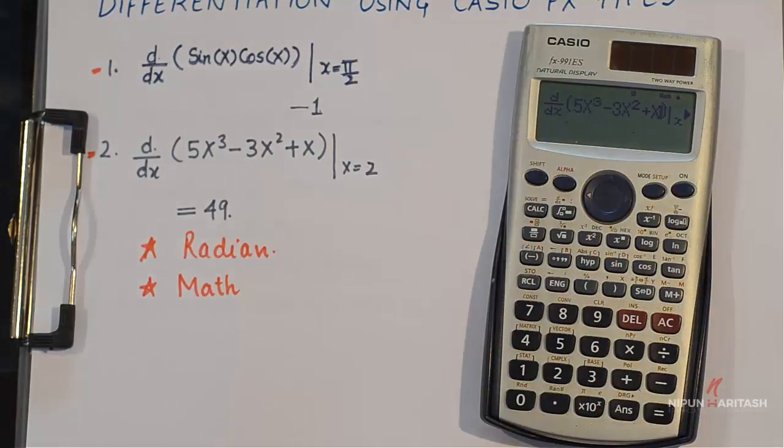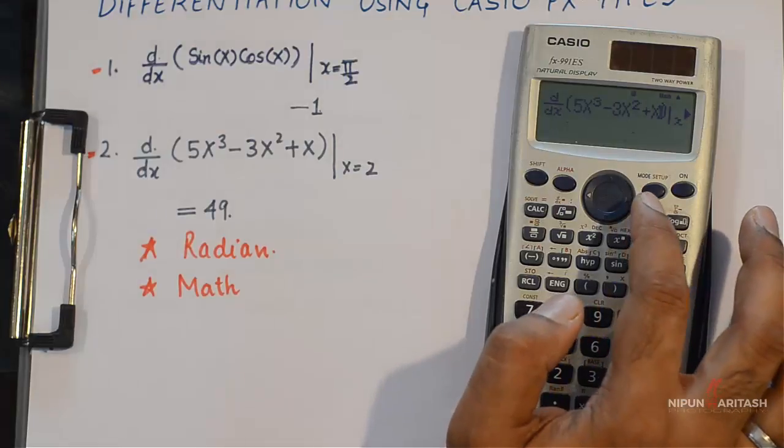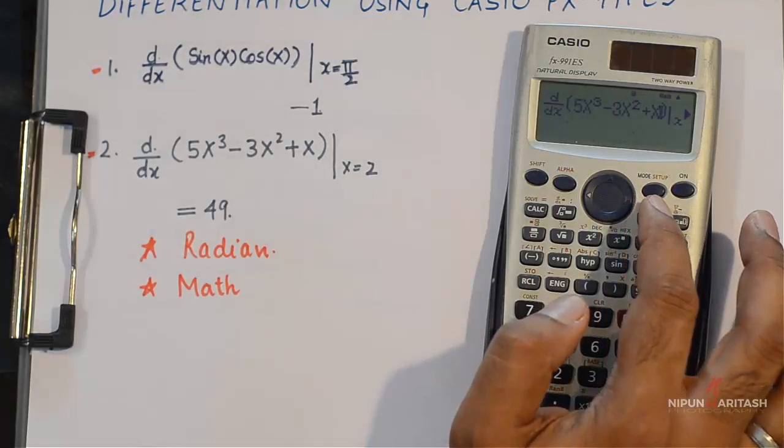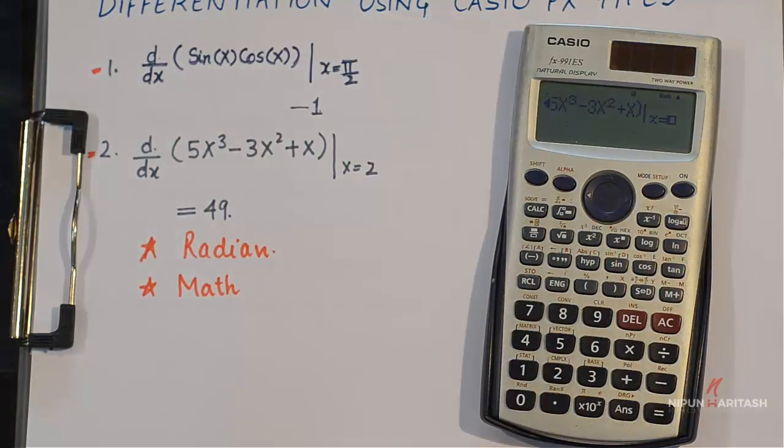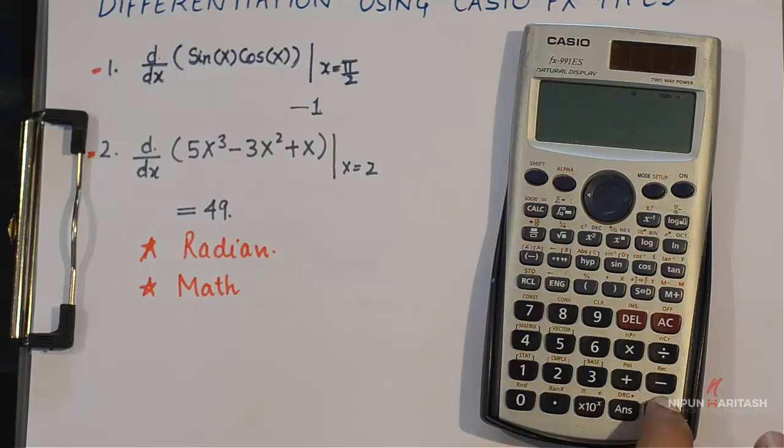Now we need to press the right arrow and I want to find the differentiation of this algebraic function at value x equals 2. So I'll press 2 and equal sign. So the answer is 49.